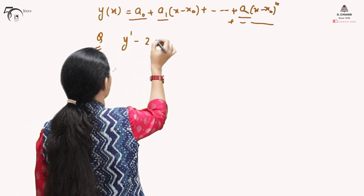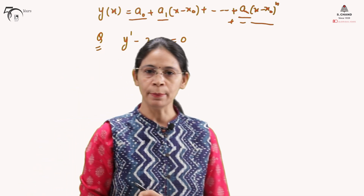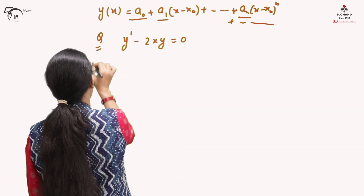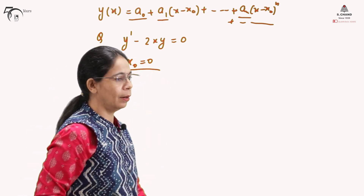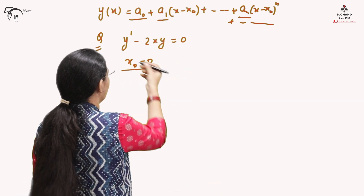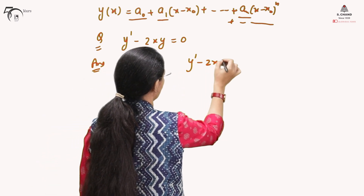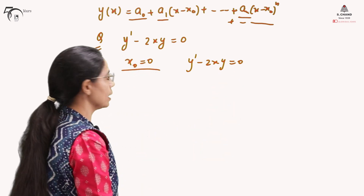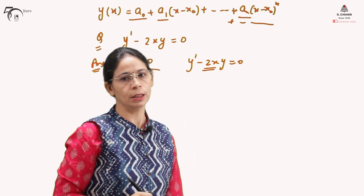The equation is y' - 2xy = 0. The aim is to find out the series solution about the point x equals to 0 (x-naught = 0) to make the situation simpler. We can see that at x-naught equals to 0, the coefficients are analytic at x equals to x-naught — that is x equals to 0. Therefore, x equals to 0 is an ordinary point.